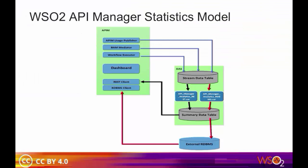The WSO2 API Manager generates events based on the API Manager invocation pattern and publishes them to all the listening event analyzers. The analyzer is responsible for the accumulation of all events and generates summary data based on the defined summarization logic. After the summarized data is generated, the API Manager dashboard can retrieve statistics from the analyzer data source to the UI via the API Manager Analytics client.